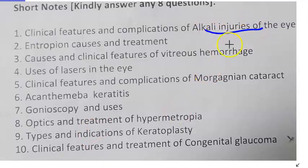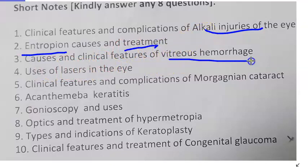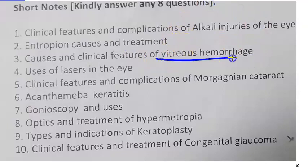Alkali injuries to the eye are more dangerous than acid injuries because alkali can dissolve lipids. Management involves washing the eye. Entropion — causes include age, and treatment involves surgical techniques you must explain. Vitreous hemorrhage causes and clinical features: vitreous hemorrhage can cause sudden painless loss of vision.